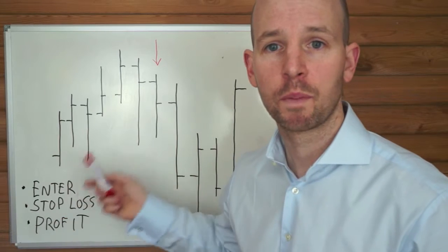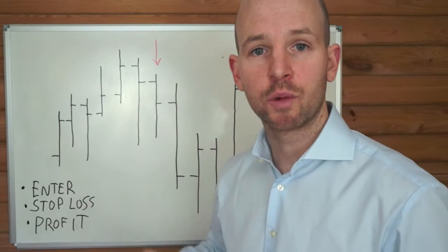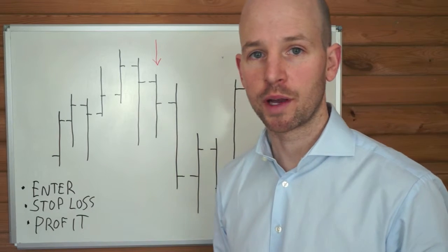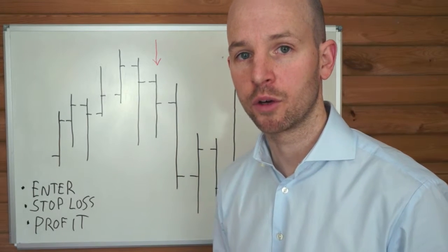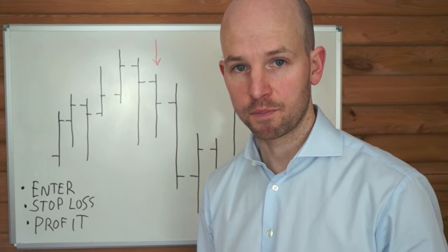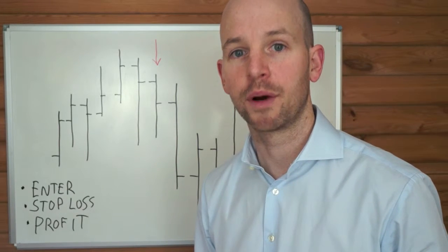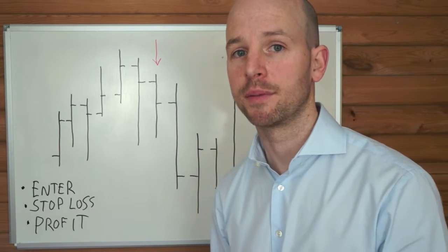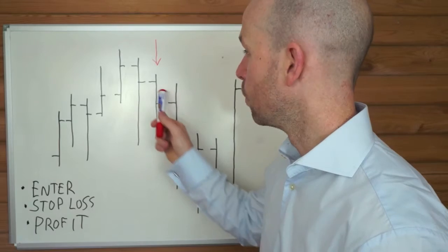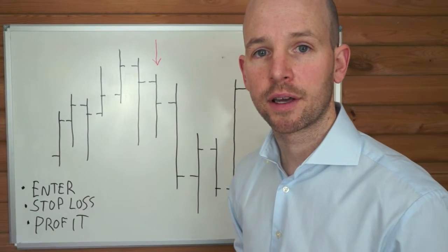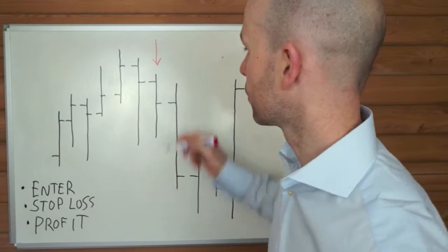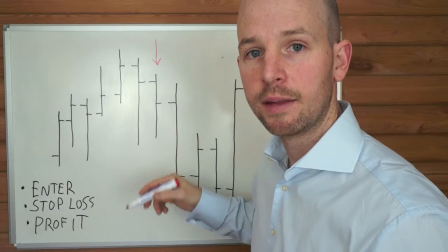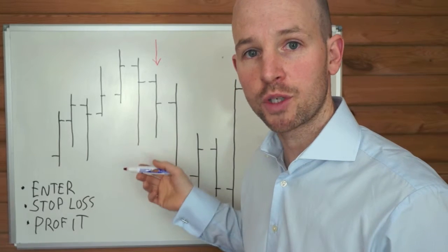Entry orders. With this strategy we don't enter the market manually. What we do is we set orders to enter when the price hits a certain level. We use stop orders — you can use limit orders as well but I don't recommend that; that won't work with this system. We want to be using stop orders to get into the market. We look for the high price of the day and the low price of the day and then we place two separate orders.